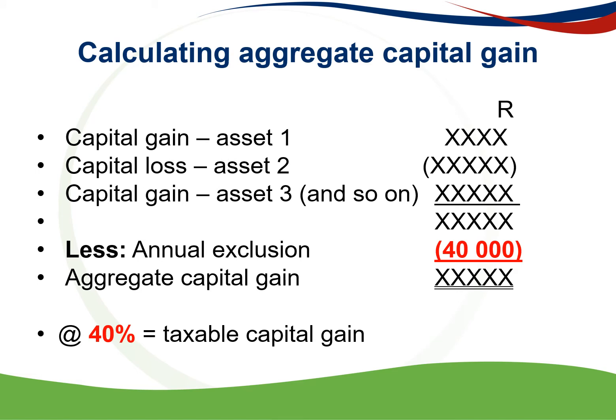Calculating the aggregate capital gain. The capital gains and losses of all assets that were disposed of during the year of assessment must be calculated and added together. So for capital asset 1 there is a gain, the capital loss for asset 2, and the capital gain for asset 3. You add them together, and from there you deduct your annual exclusion of 40,000 rand for individuals, and that gives you your aggregate capital gain. Then you apply the 40% inclusion rate, and that will give you your taxable capital gain.